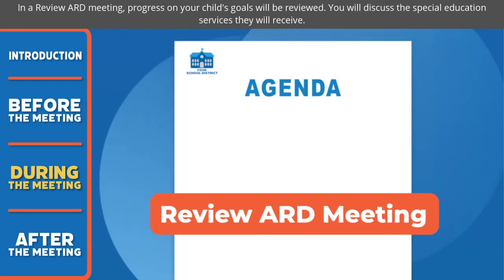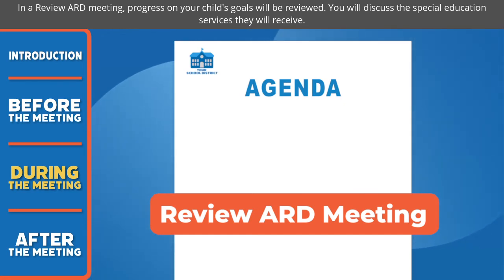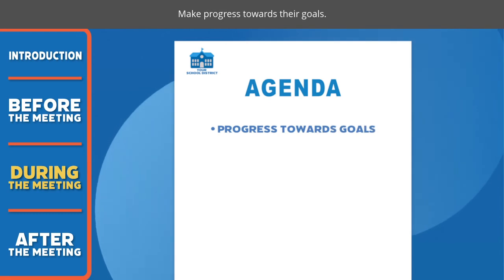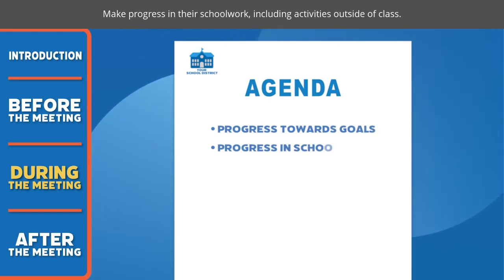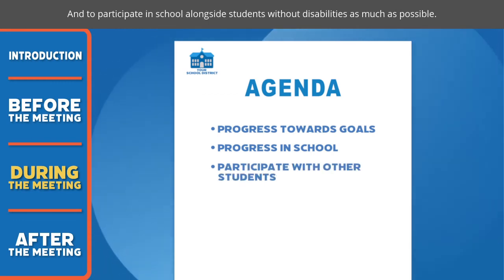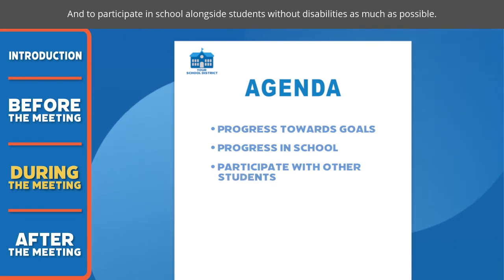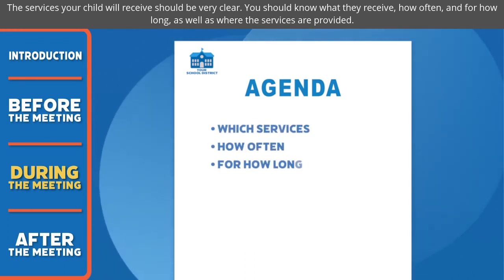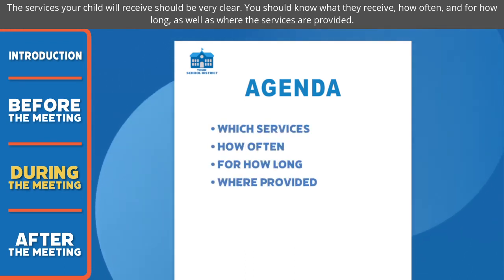In a review ARD meeting, progress on your child's goals will be reviewed. You will also discuss the special education services they will receive — including the services your child needs to make progress toward their goals, make progress in their schoolwork including activities outside of class, and to participate in school alongside students without disabilities as much as possible. The services your child will receive should be very clear: you should know what they receive, how often, for how long, and where the services are provided.